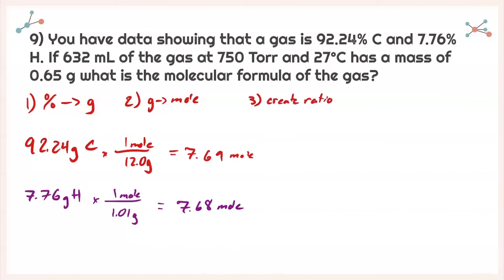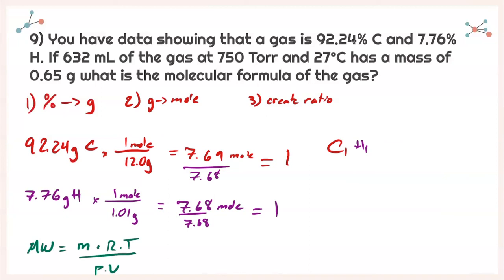Now we create our ratios by dividing by the smallest number. Dividing 7.69 by 7.68 gives 1, and 7.68 by 7.68 also gives 1, so the empirical formula is C1H1. To get the molecular formula, I need to know the molecular weight using: molecular weight equals mass times R times temperature divided by pressure times volume.